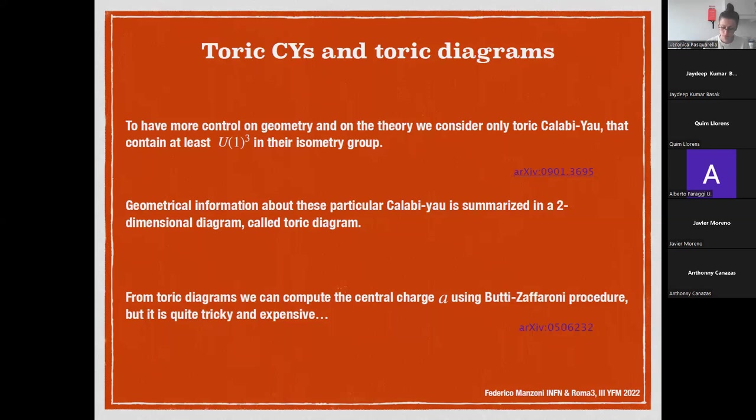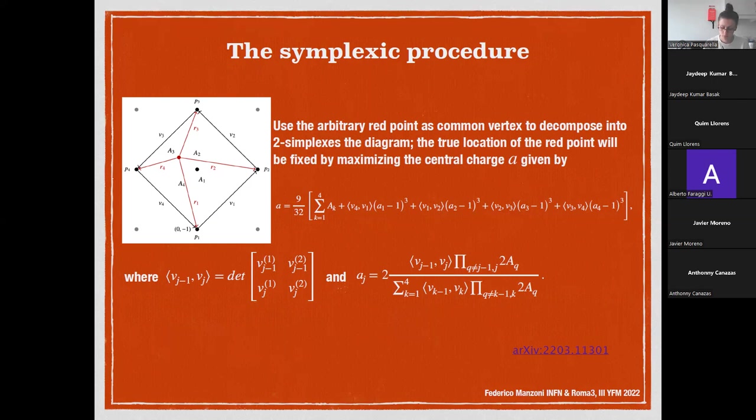From this toric diagram, you're able to construct the central charge using a procedure due to Butti-Zaffaroni. However, this procedure is expensive from the computational point of view and in some cases is quite tricky. So I proposed a new equivalent procedure based on the decomposition of the toric diagram into two simplexes. Here's an example: you can use these red points to decompose the toric diagram into two simplexes. The true location of these red points will be fixed by maximizing the central charge a.